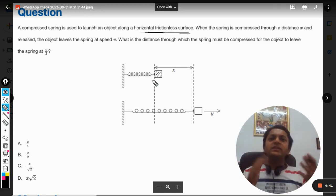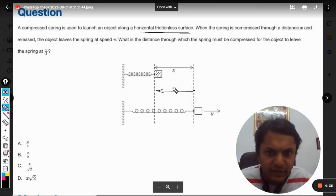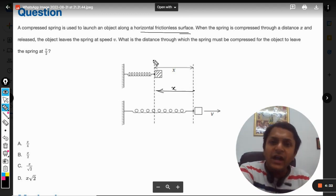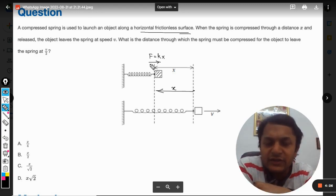We have compressed the spring. This is the mean position. We compressed the spring by distance x, and obviously there is a force that this spring is applying on the body, which will be equal to F = kx.